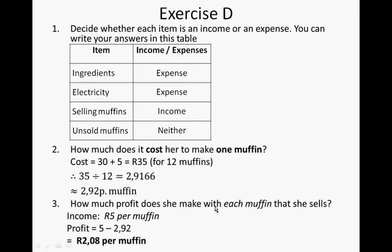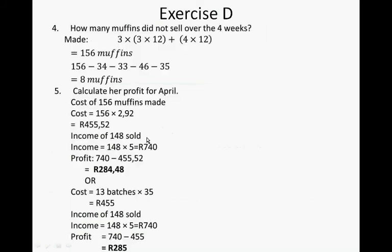How much does she make with each muffin that she sells? Income is 5 Rand per muffin, so the profit is 5 minus 2 Rand 92, which is 2 Rand 08 cents per muffin. How many muffins did not sell over the 4 weeks? She made 3 batches three times and once she made 4 batches, so it was 156 muffins. She sold 34, 33, 46 and 35. So 8 muffins did not sell.